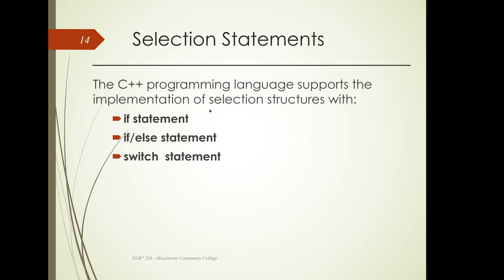There are three different statements we can use in C++ to implement selection structures: if, if-else, and switch statement. If basically means if some condition is true, then execute some code; if false, skip that code. The if-else says if some condition is true, execute the code; if false, execute the else part. The switch statement is a list of items you can select from — like a vending machine where pushing button one gets item one, button two gets item two, and so on.